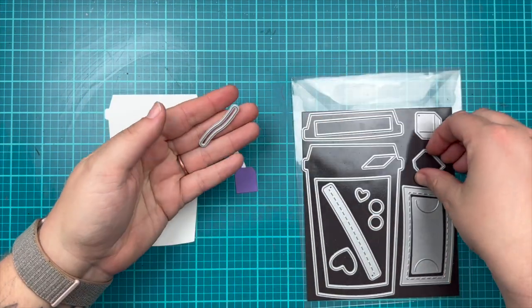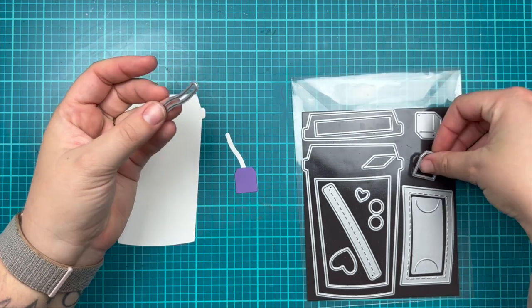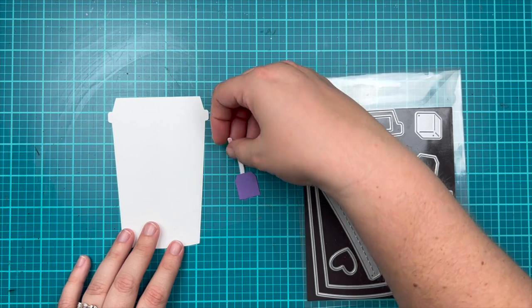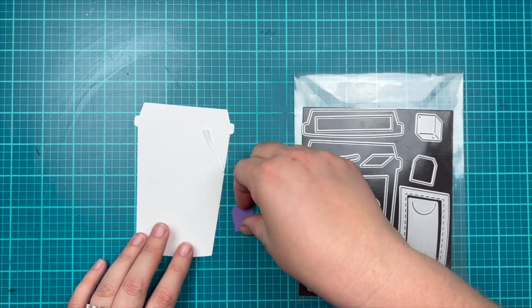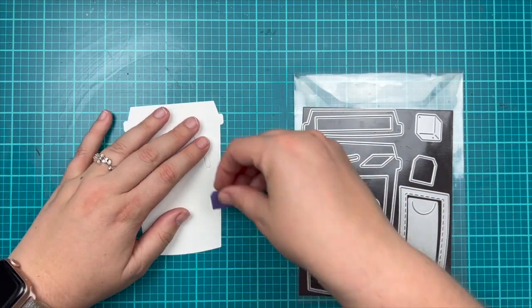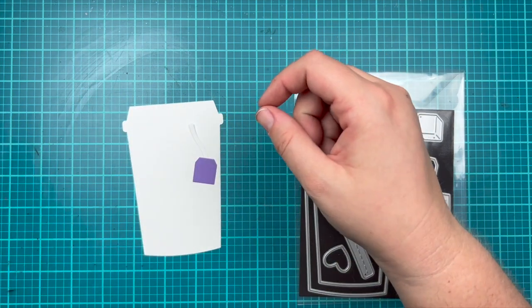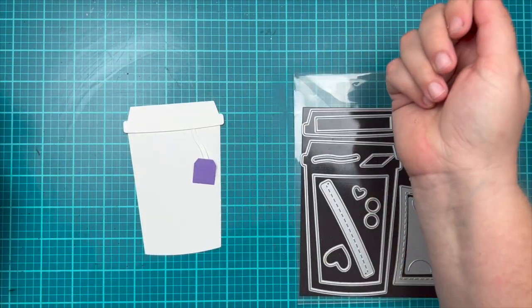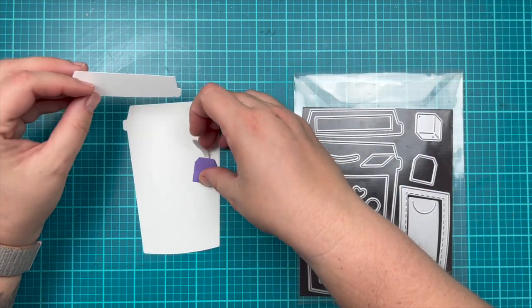Of course we have our tea bag, so we have the die cut that makes the string and a die cut for the tag. You could glue those together and place your tea string so it's just about to go where the lid is, then adhere the lid on top and it looks like your little tea bag is tucked inside of your cup.